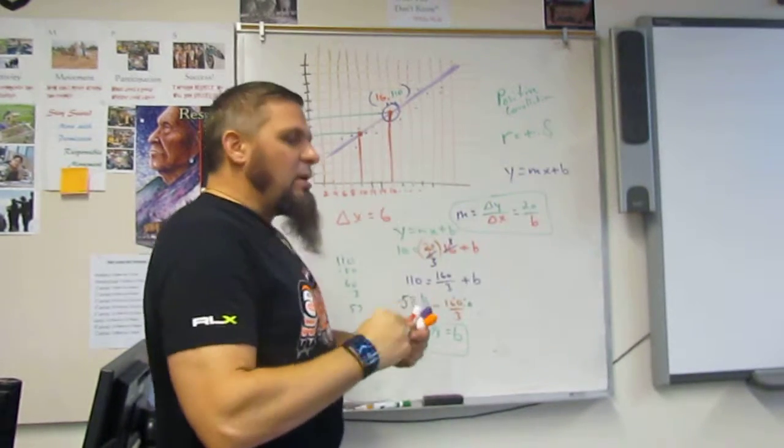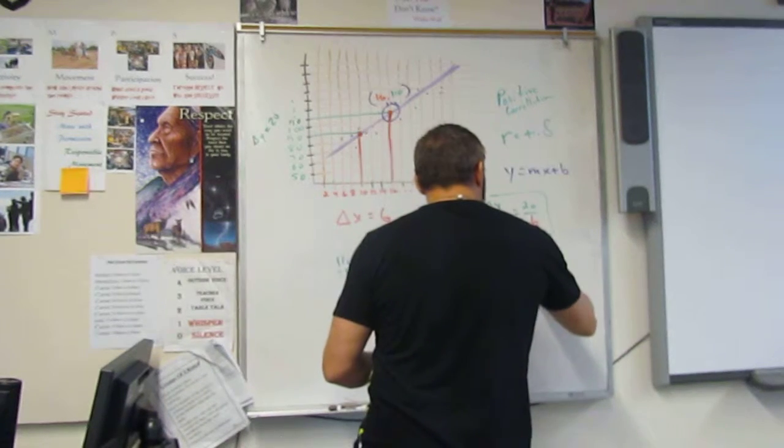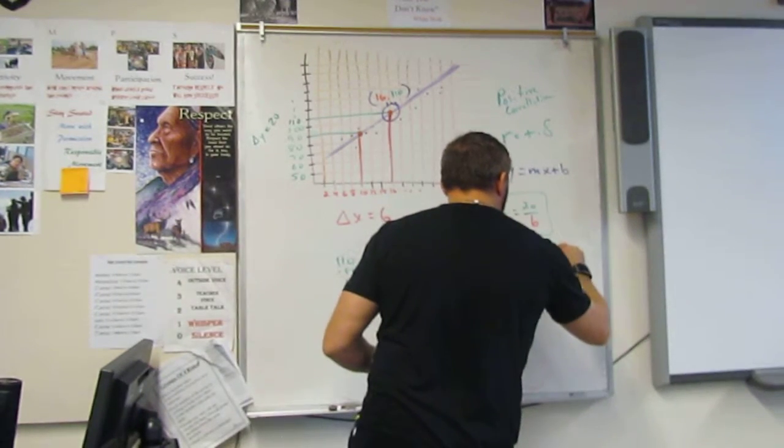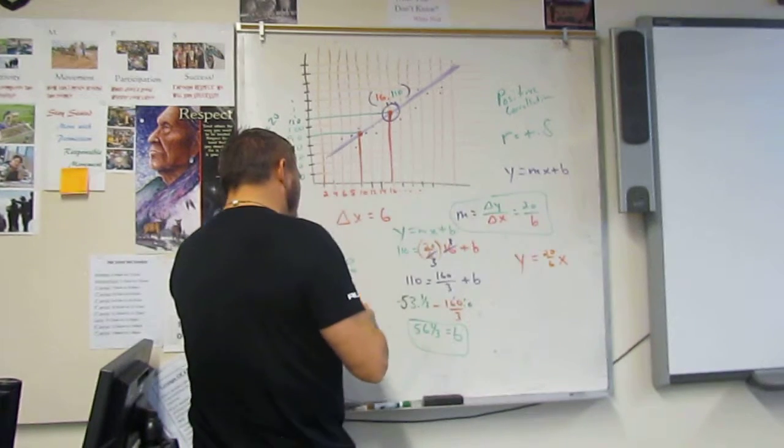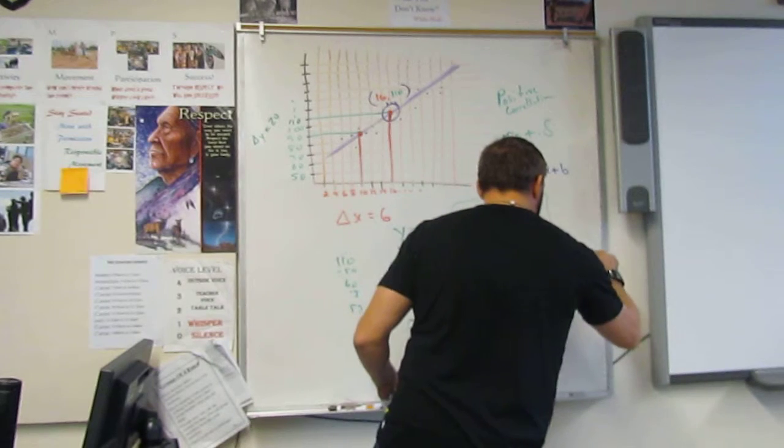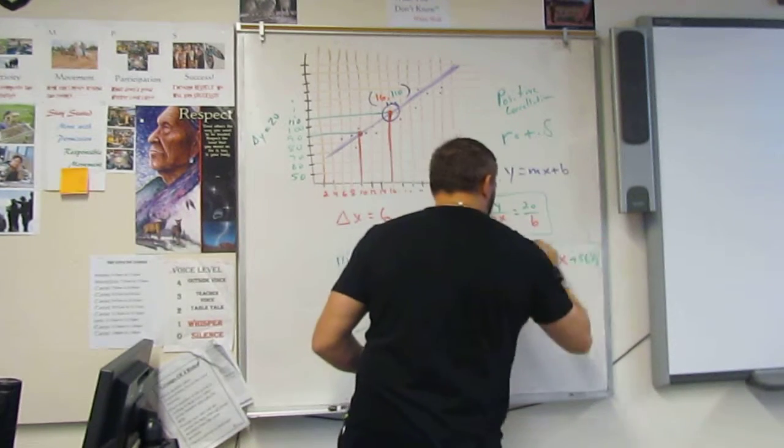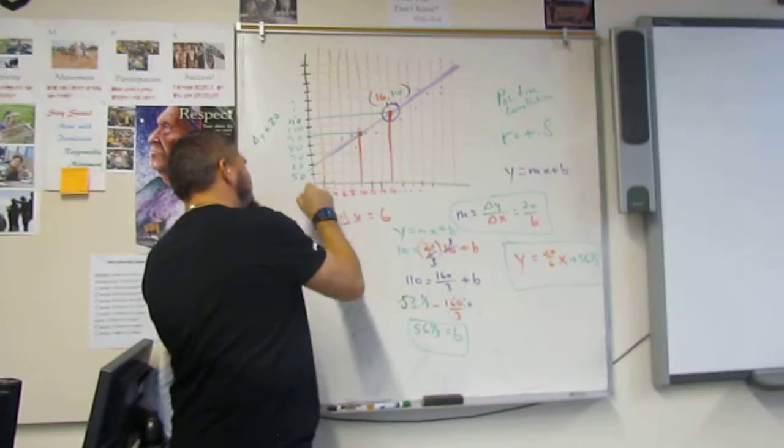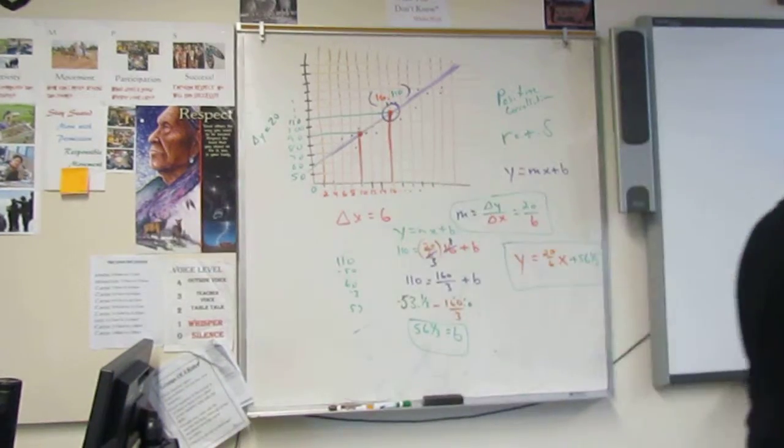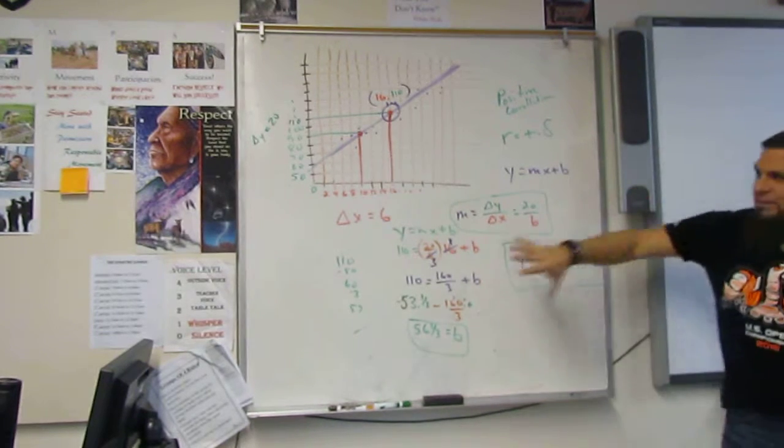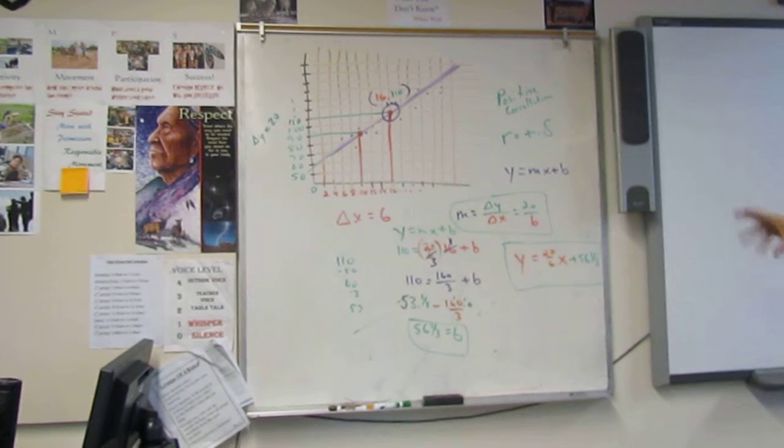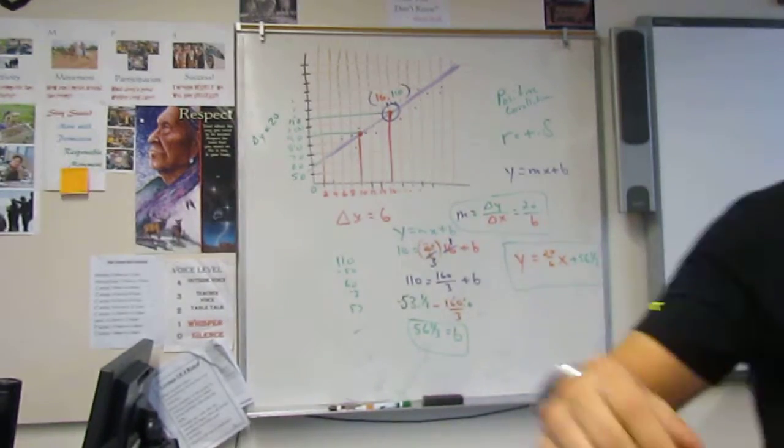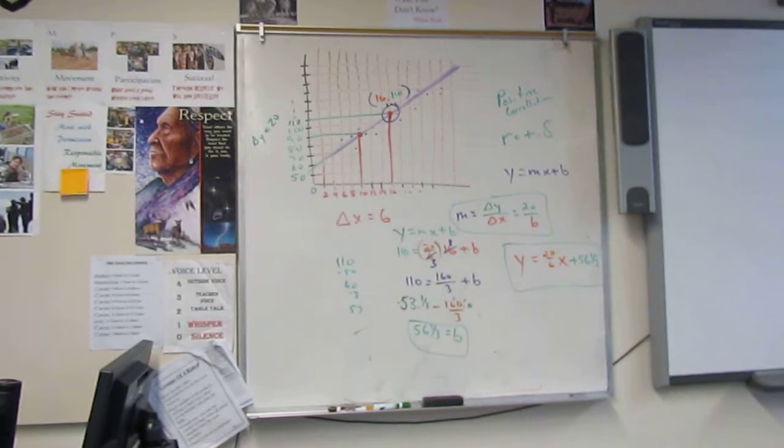We have Y equals MX plus B. And so we create it that way. Y equals X, and then we plug in the M, 20 over 6, and we plug in the B, plus 56 and a third. And then we double check it. Does that seem about right? 56 and a third. Yeah, that's about right. As long as that's zero, and it is. And that's how you do that problem. There's a lot of steps to it. And it doesn't get any harder than that right there. You'll never get harder than fractions in your B.